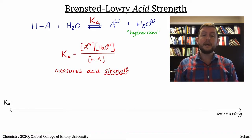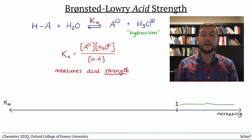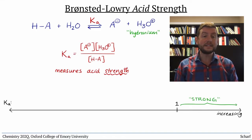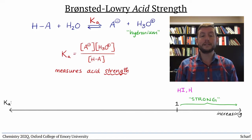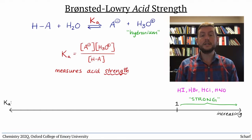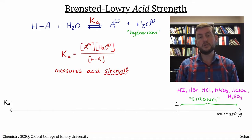By convention, an acid is called strong if its Ka is greater than or equal to 1. There are six common strong acids which you should memorize: hydroiodic acid HI, hydrobromic acid HBr, hydrochloric acid HCl, nitric acid HNO3, perchloric acid HClO4, and sulfuric acid H2SO4.